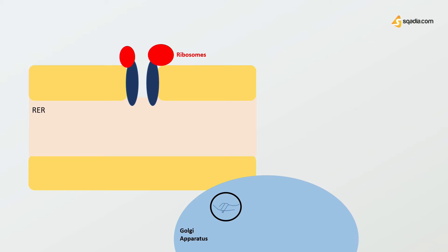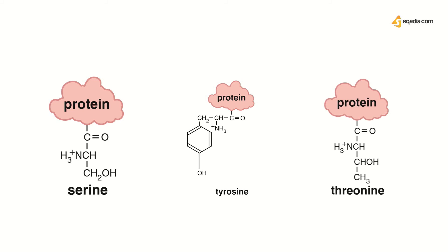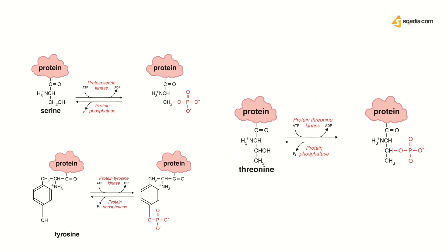Insulin receptors contain phosphate and are subjected to covalent modification by phosphorylation and dephosphorylation reactions. This reversible phosphorylation activates or deactivates the receptors. The sites for protein phosphorylation are amino acid residues containing hydroxyl groups — most commonly serine, but also tyrosine and threonine. Phosphorylation uses protein kinase and dephosphorylation uses protein phosphatase.